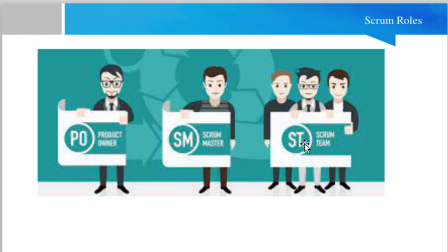The third role is the Development Team. These are persons like software engineers, graphic designers, deployment engineers, QA engineers, and database engineers. The development team is self-organized and self-motivated — they take their own decisions, plan and organize things by themselves, and are a self-motivated team to develop the software.